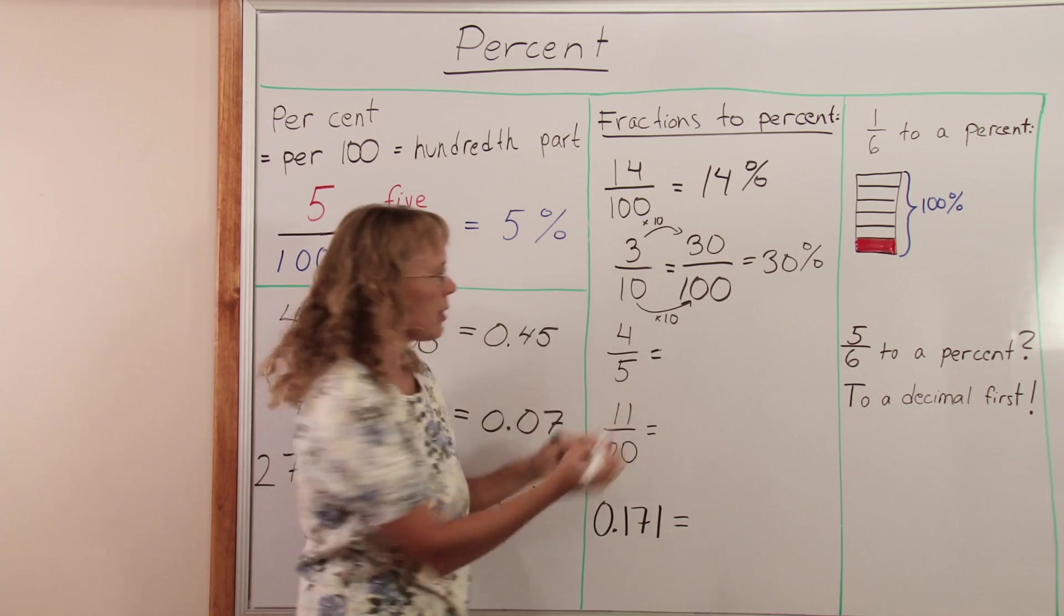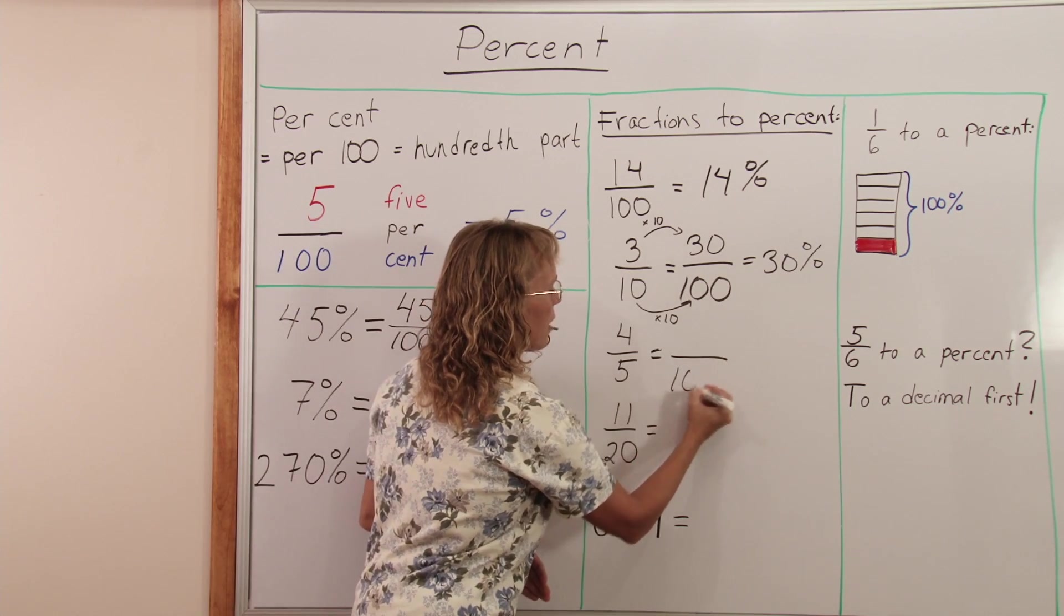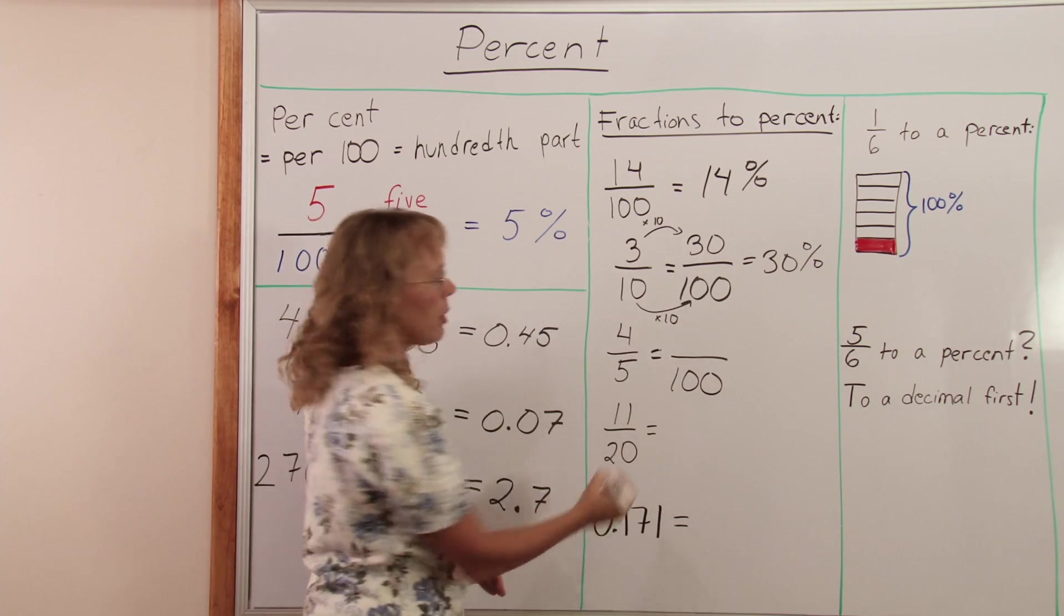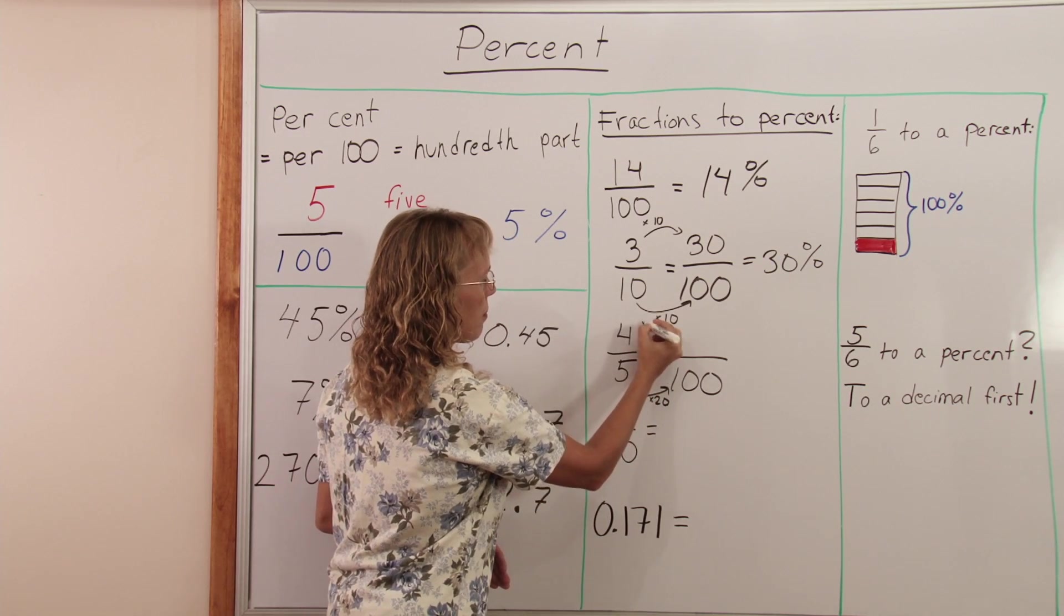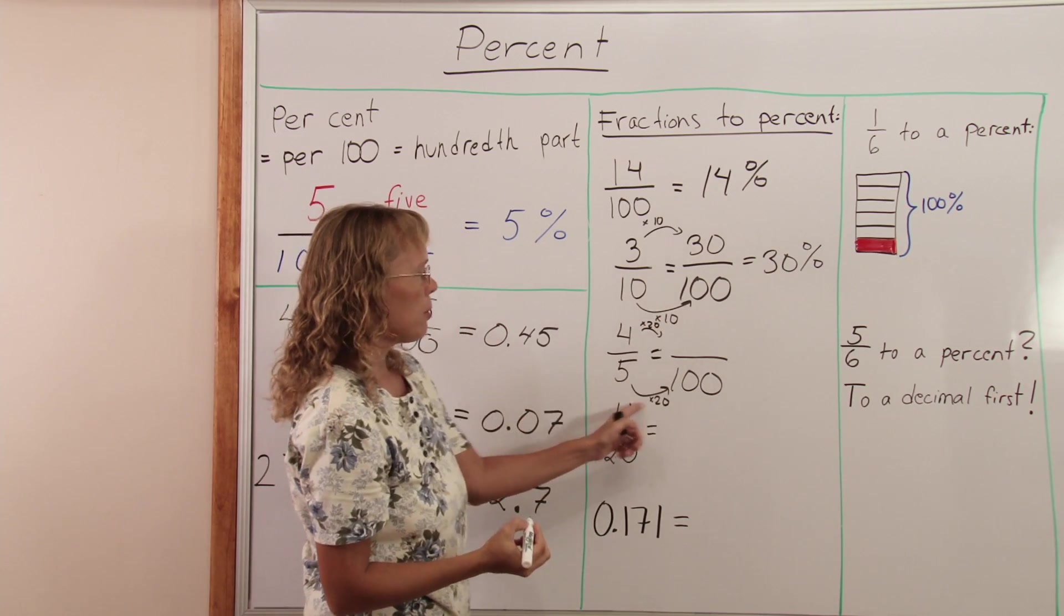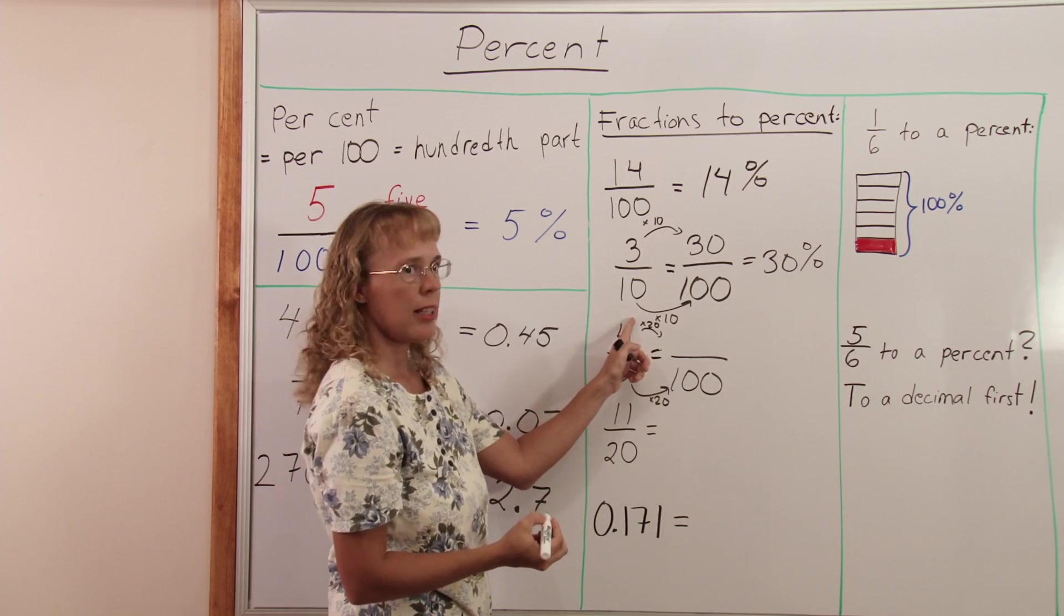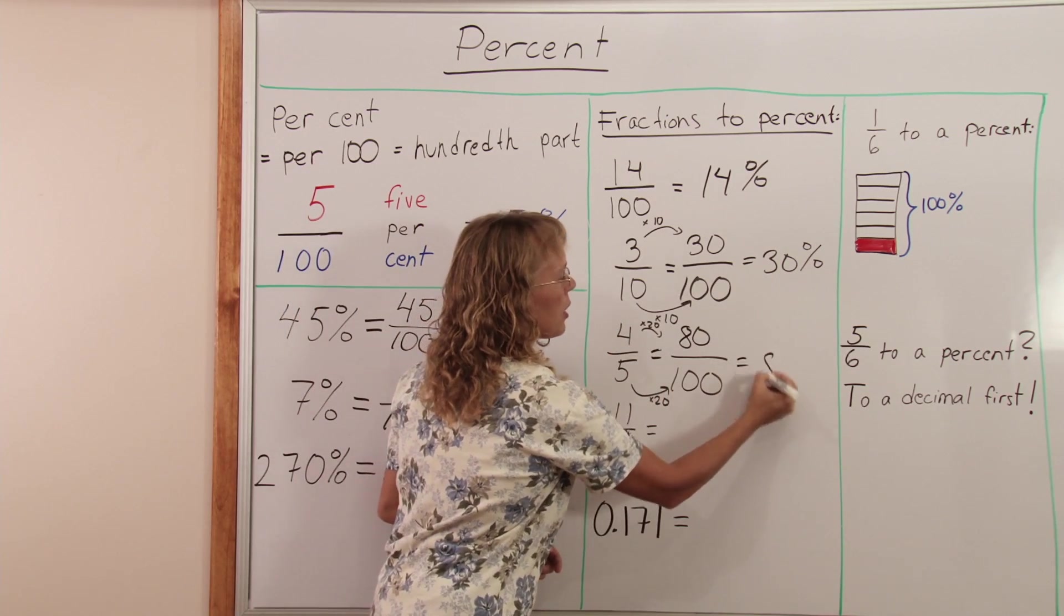Similarly with 4 fifths we can easily write it as something of a hundred using equivalent fractions. This time you multiply by 20 here. 5 times 20 is 100. And so 4 times 20 is 80. And I have my 80 percent.